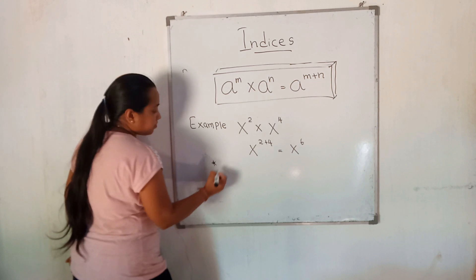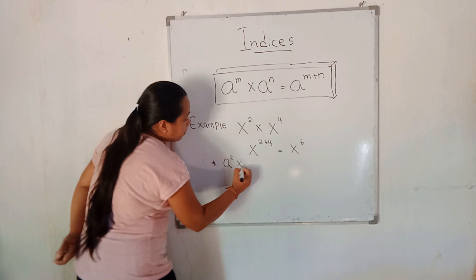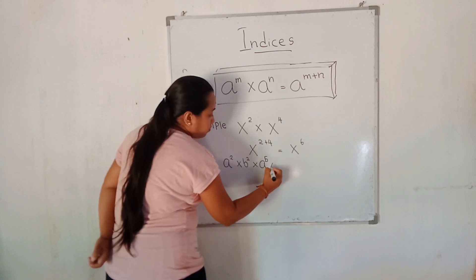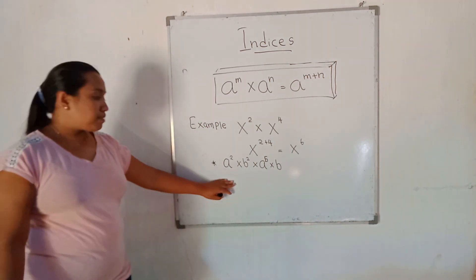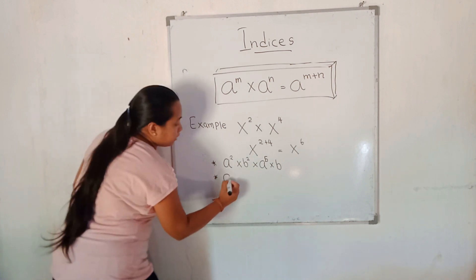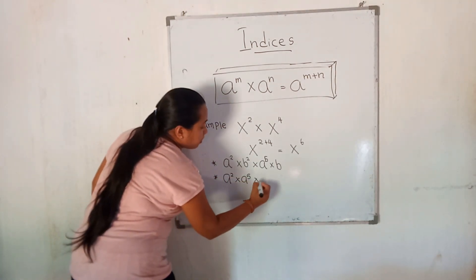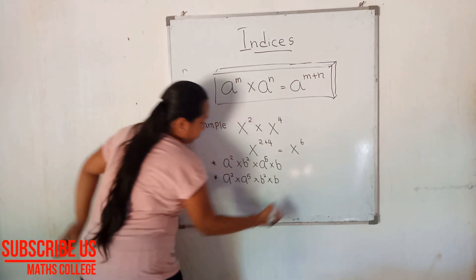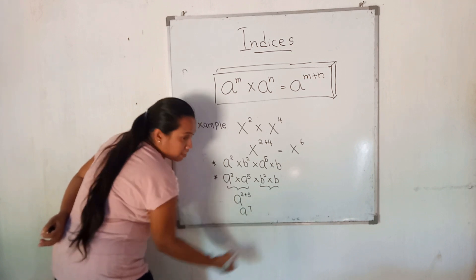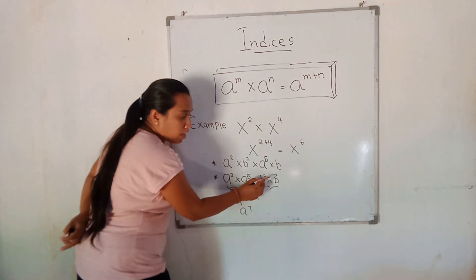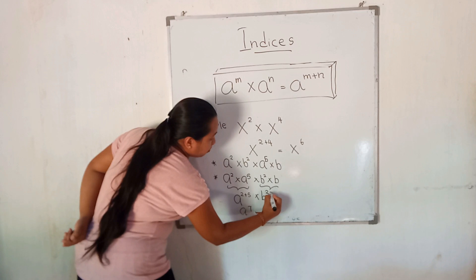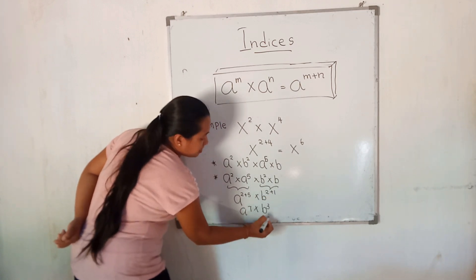Next example: a to the power 2 multiplied by b to the power 2 multiplied by a to the power 5 multiplied by b. This product has two different bases, A and B. We can only add indices of the same base. So group them: a to the power 2 times a to the power 5, and b to the power 2 times b. Adding: 2+5 = a to the power 7. For b, there is no written index so the index is 1, giving b to the power 2+1 = b to the power 3. The final answer is a to the power 7 times b to the power 3.